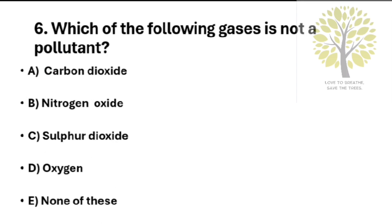Question number 6: Which of the following gases is not a pollutant? Option A: Carbon dioxide. Option B: Nitrogen oxide. Option C: Sulfur dioxide. Option D: Oxygen. Option E: None of these.